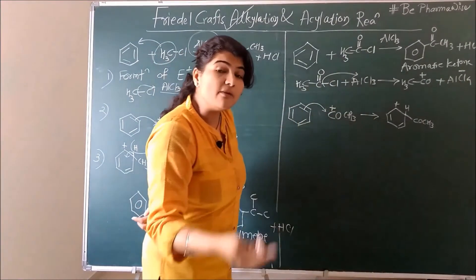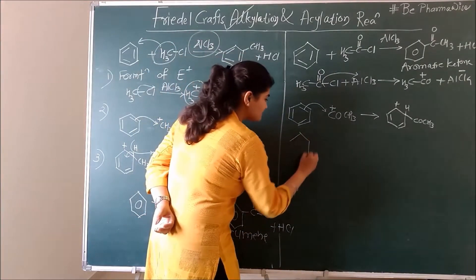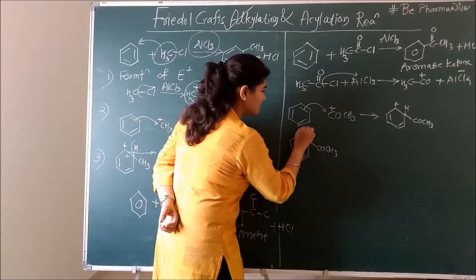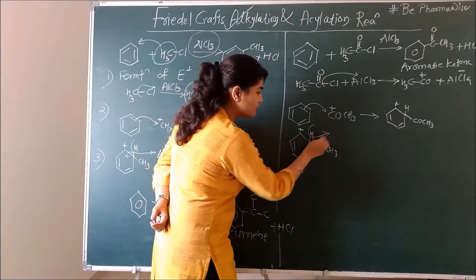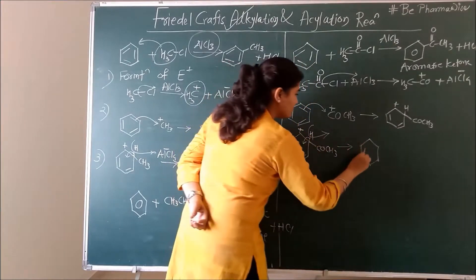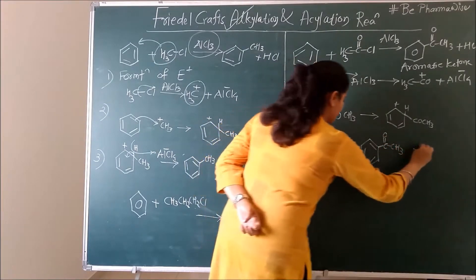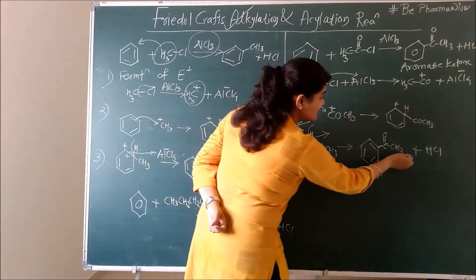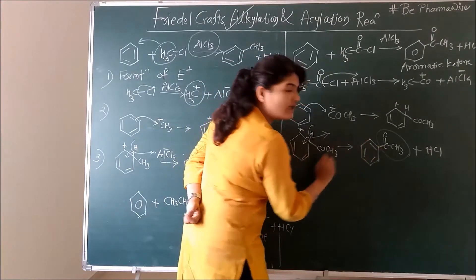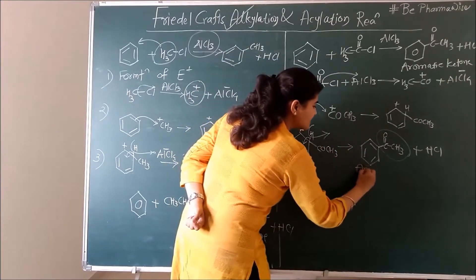This carbonium ion then loses a proton in the third step to give you the aromatic ketone. The proton is removed, the electrons are taken back, and you get benzene attached to COCH3 plus HCl. This COCH3 group is called the acetyl group, and the product is an aromatic ketone — its name is acetophenone.